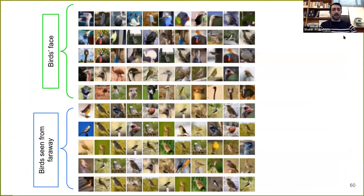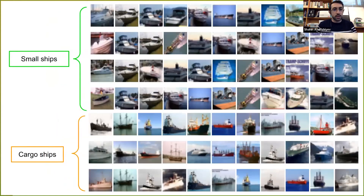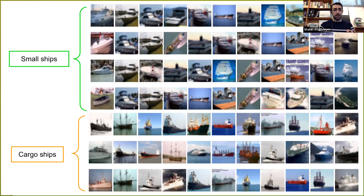Thank you very much for your presentation. I have some comments about explanation versus description. For example, with the birds and ships examples — I guess these are description rather than explanation. Description and explanation are different concepts. Explanations answer the question of 'why.' A good explanation would be: this is a small ship because... Providing the 'because' would be a good addition to bring reliable explanations. The point is that these training instances have contributed the most for this decision being made — that is for sure and is not unreliable. But classifying them as small ships — I agree that part is description.